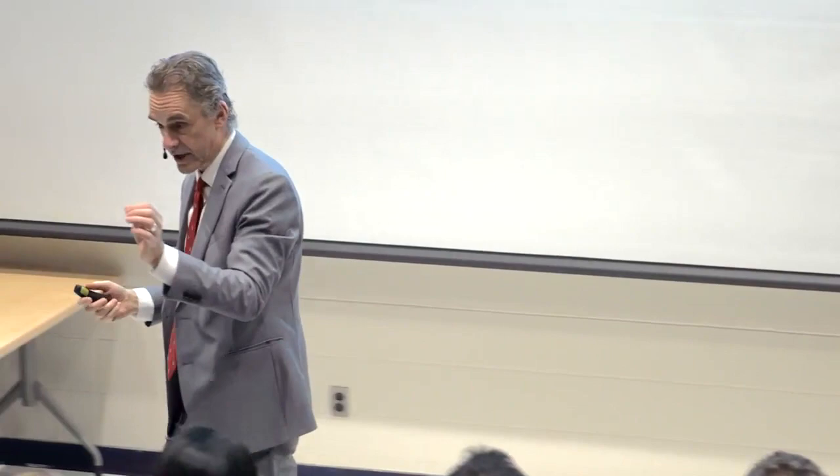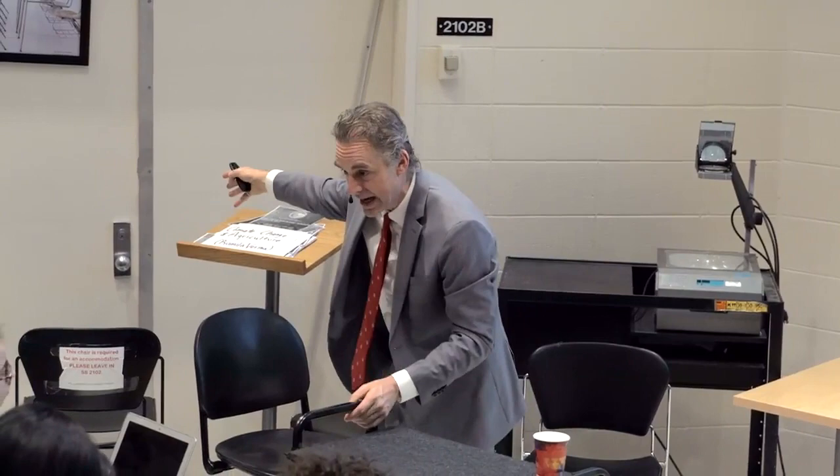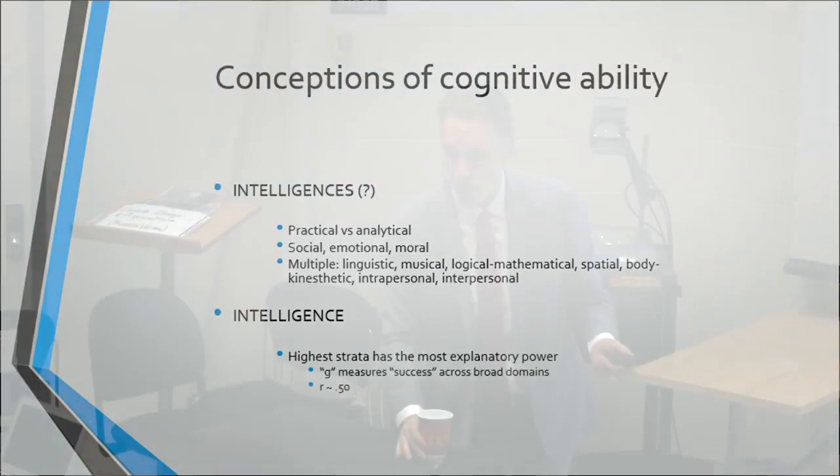This is how the psychometricians do it. Something is real if you can measure it and it helps you predict — that's how it's defined. So then you might ask: are there multiple intelligences? The first question would be what do you mean by 'are there'? Let's specify the question scientifically: let's predict how well people do in university.